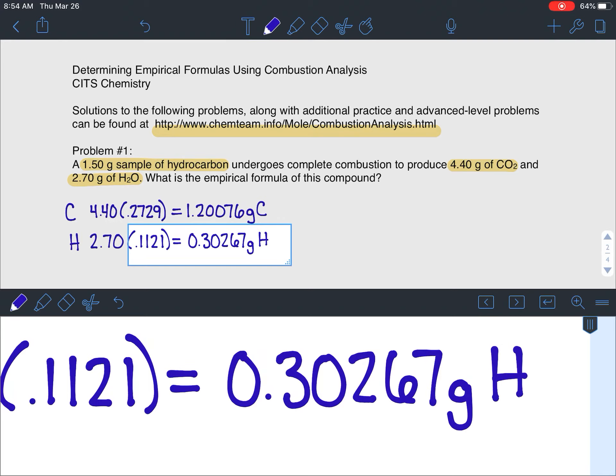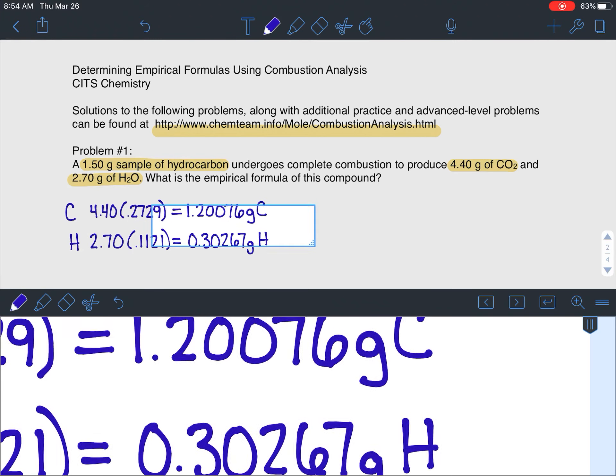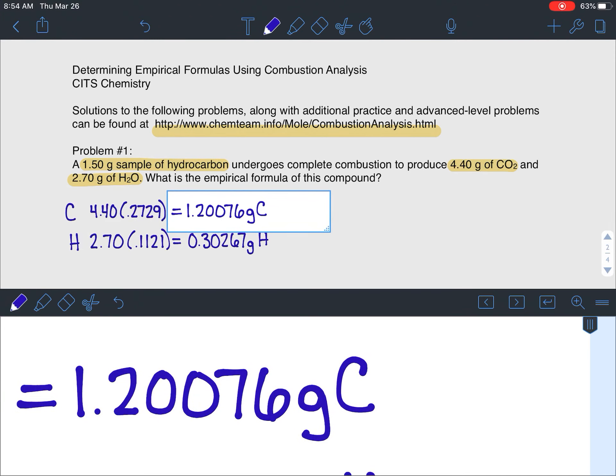If I want to know if there's oxygen in this compound, all I have to do is add the masses of carbon and hydrogen together. And if it doesn't equal the 1.5 or if it isn't really close, then I know that I must also have oxygen in the compound. Generally, in the examples, they will indicate that there's oxygen somewhere in that process.